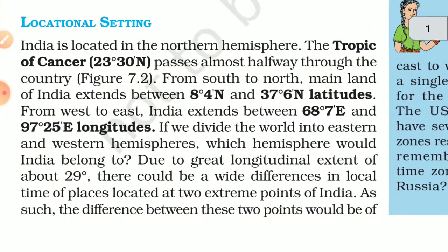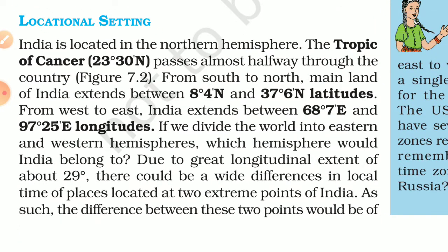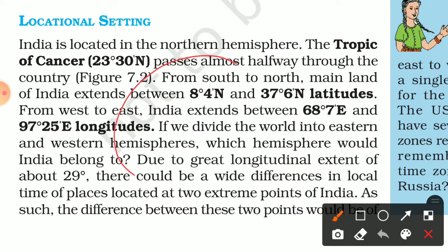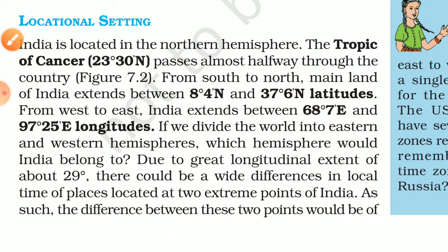Now we look at the locational setting of India. India is located in the northern hemisphere. The mainland of India extends between 8 degrees 4 minutes north and 37 degrees 6 minutes north latitudes.